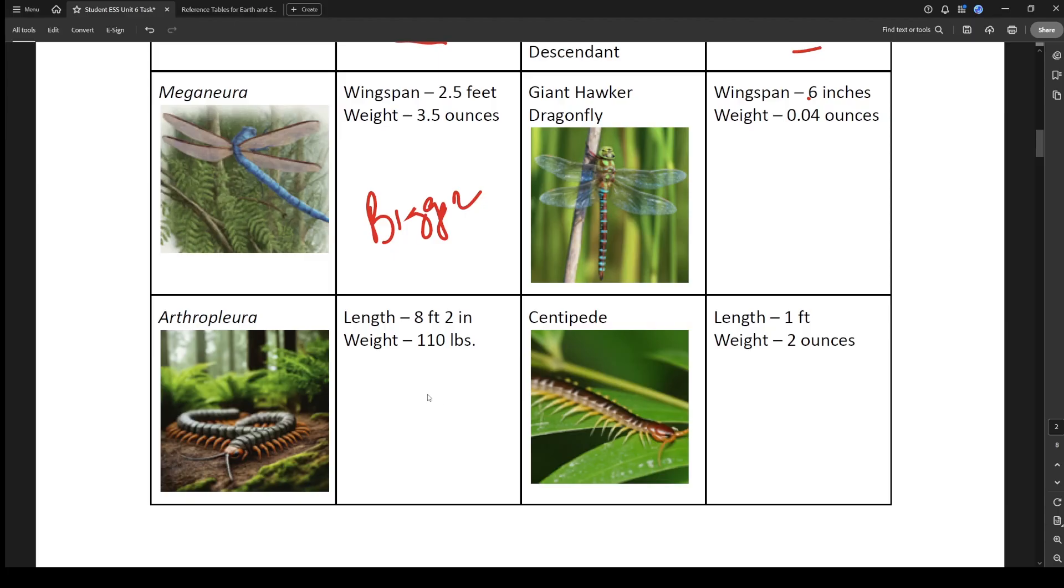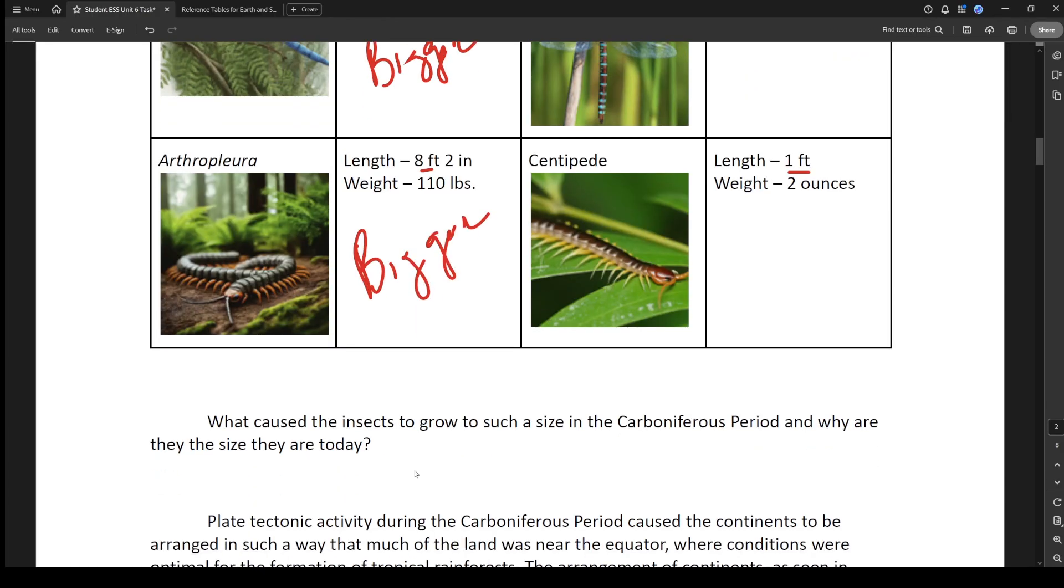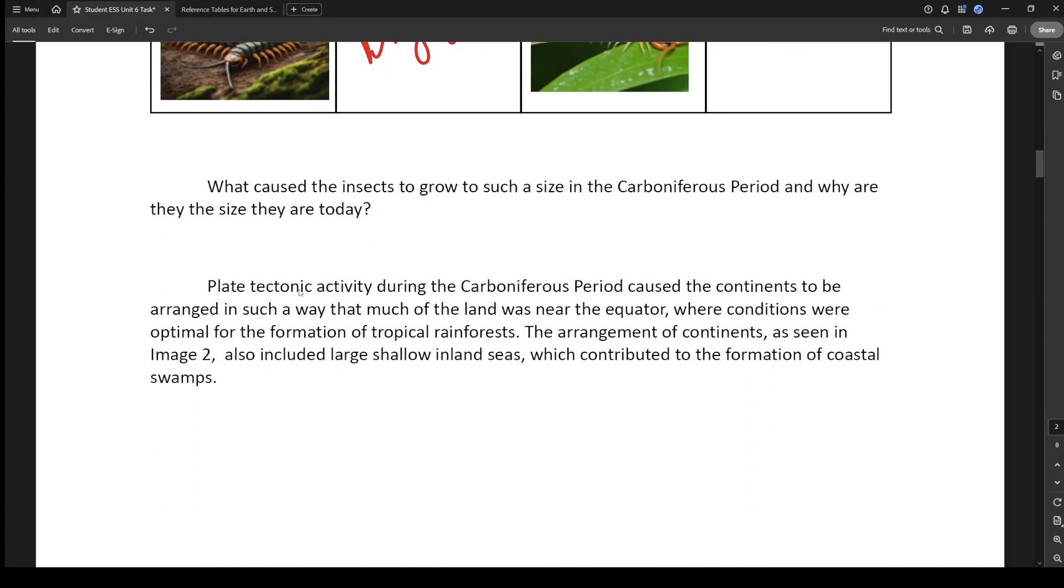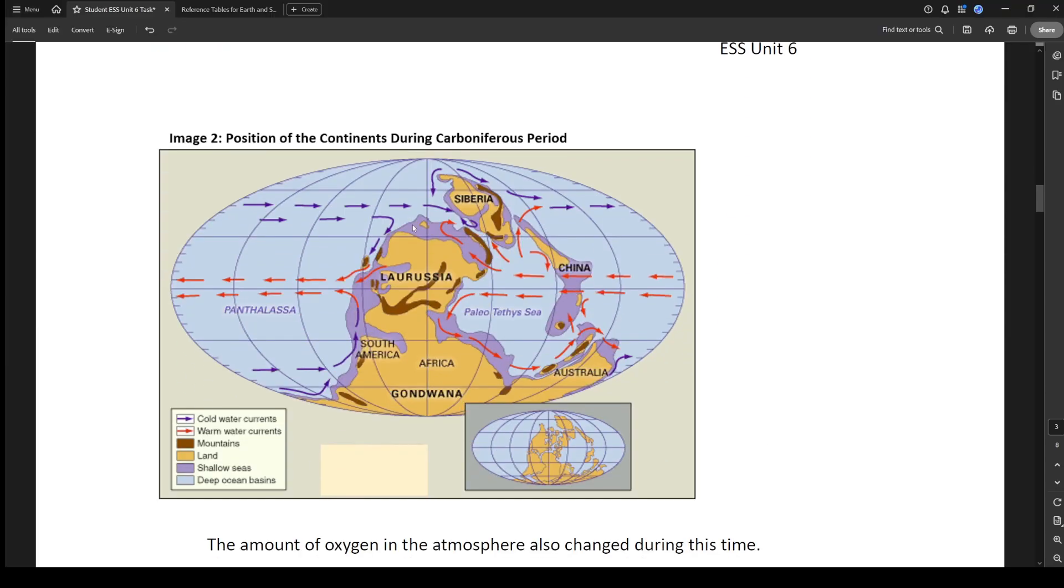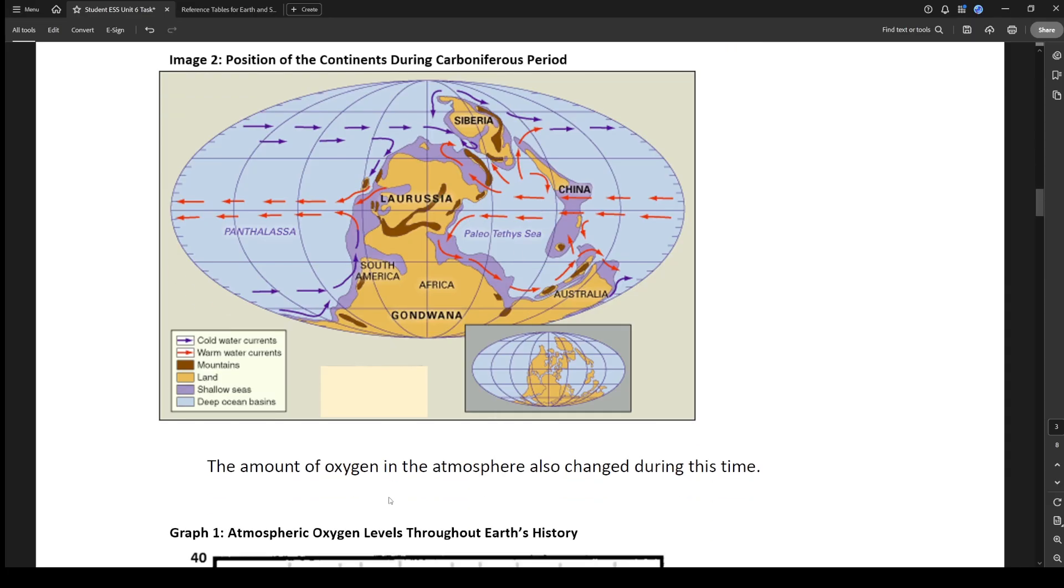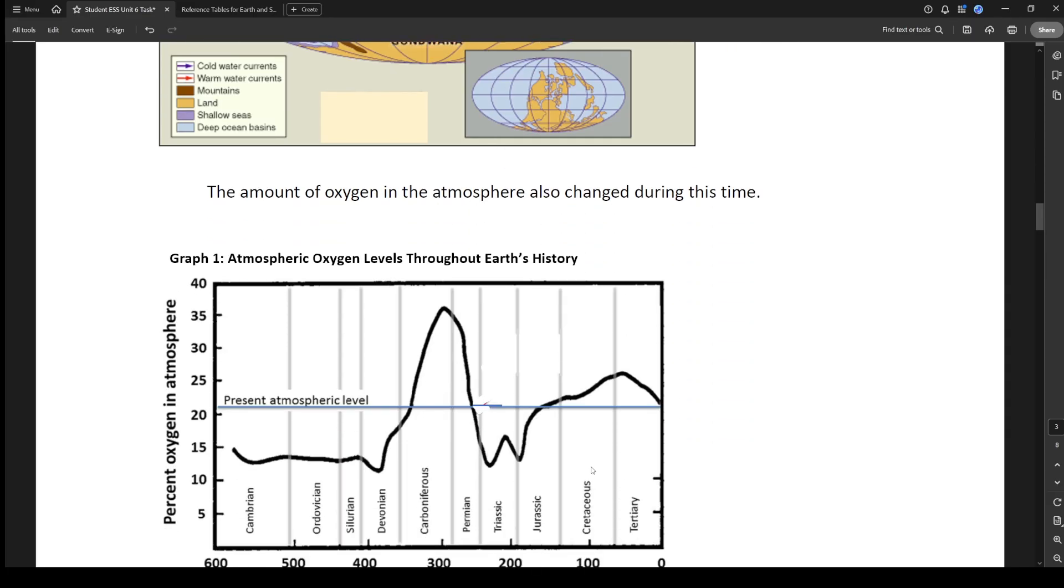During this time gigantic insects flew around the trees and crawled amongst the ferns. Table 1 shows a comparison of two insects from the Carboniferous period compared to their modern day relatives. So we could see the size difference in the Carboniferous compared to present day. So we could see, look, wingspan is 2.5 feet compared to 6 inches. This is way bigger. We got this centipede thingy, 8 feet long. Glad that doesn't exist. Versus 1 foot long. Still really gross but that's okay. Way bigger.